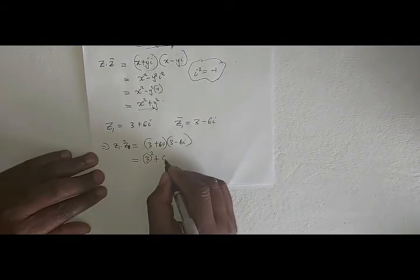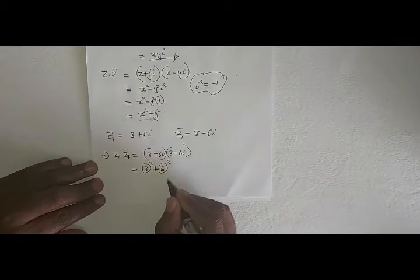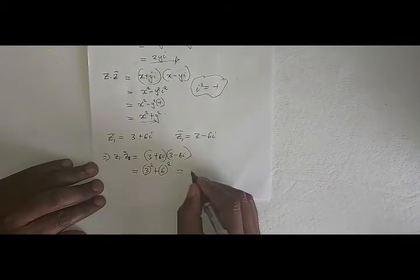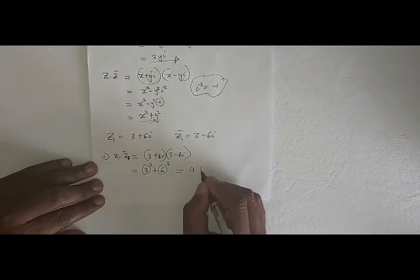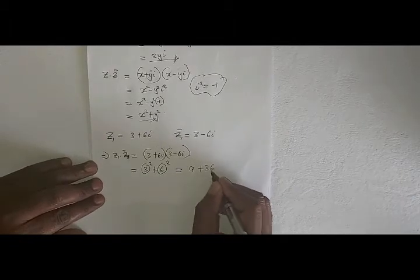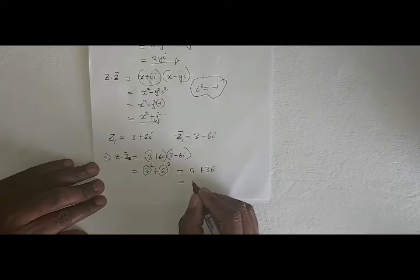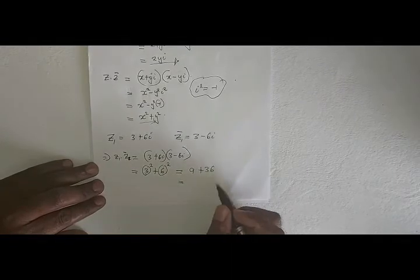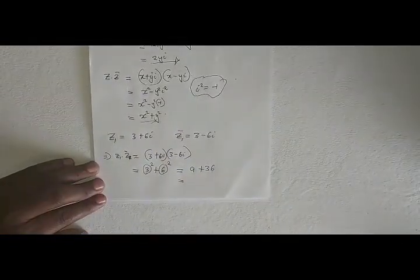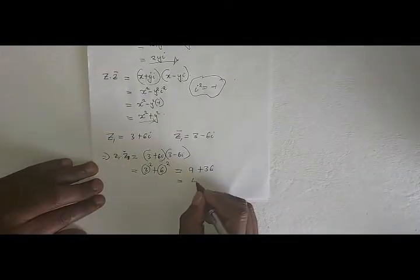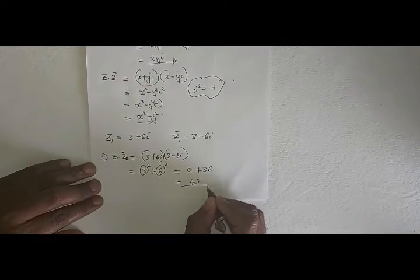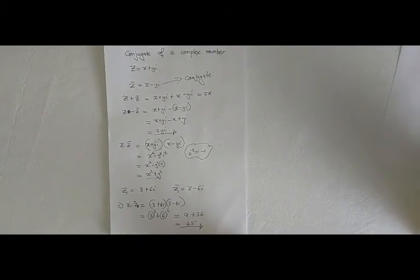That gives us 6 squared, which equals 9 plus 36, which is exactly equal to 45. Thank you so much, God bless you. Check our next video where we look at division of complex numbers.